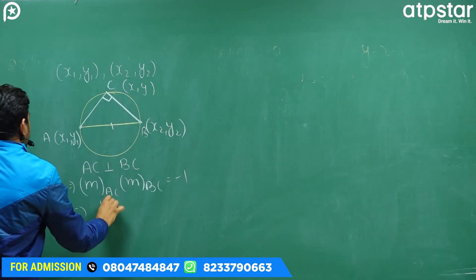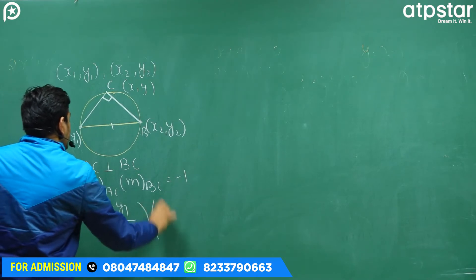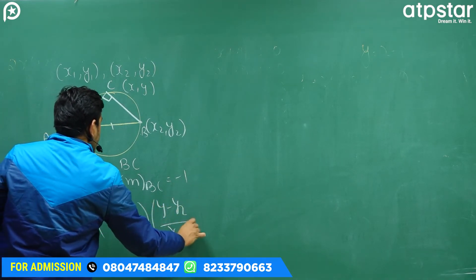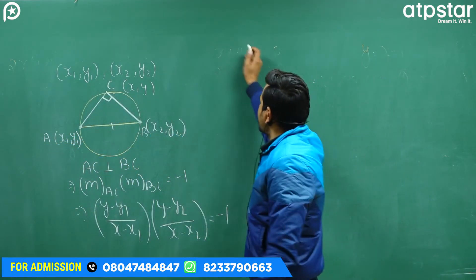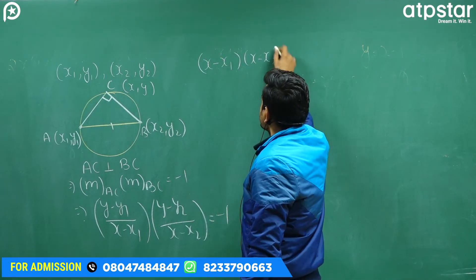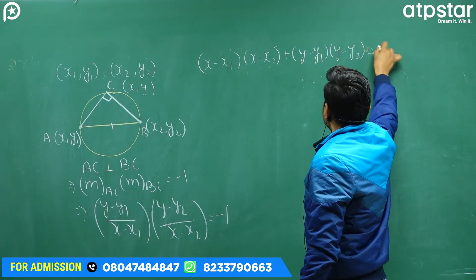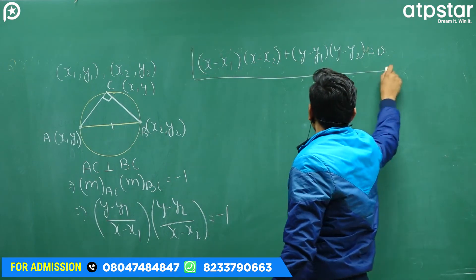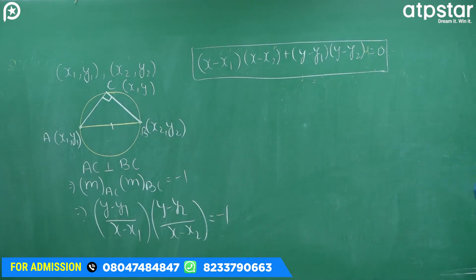तो यहाँ से: (y - y1)/(x - x1) × (y - y2)/(x - x2) = −1। इसको simplify करने पर finally आता है: (x - x1)(x - x2) + (y - y1)(y - y2) = 0। तो अगर diameter के endpoints given हैं, तो directly इस diametric form में equation लिख सकते हो।